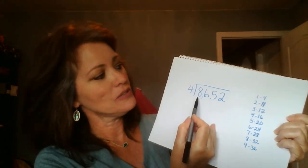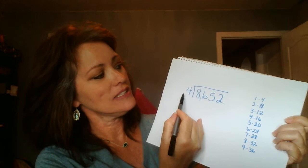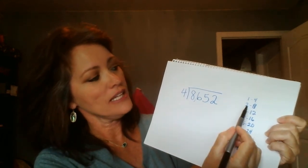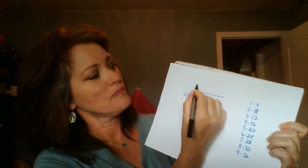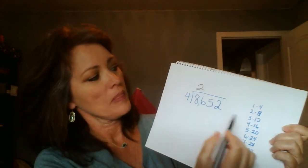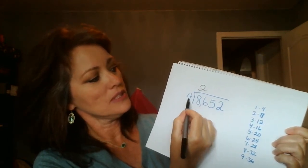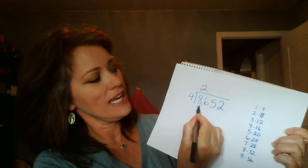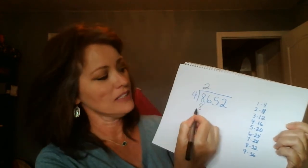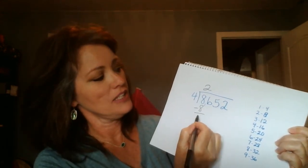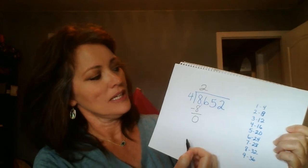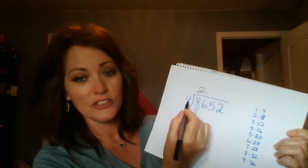So we are going to start with eight divided by four. Eight divided by four is two. Multiply two times your divisor and you get eight. Subtract those two numbers and you get zero. Make sure that number is less than your divisor.